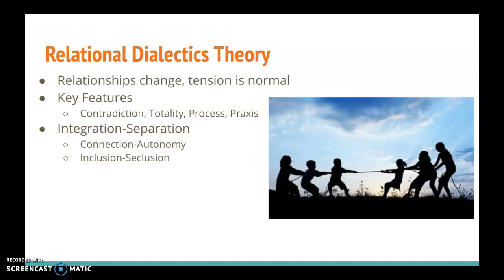Externally, a couple might experience the inclusion-seclusion tension. This happens when the couple wants to include themselves in social interactions with people outside of the couple, while at the same time feeling the need to exclude or seclude themselves to spend time alone together. So it's that tension between wanting to go out and wanting to stay in — wanting to be a part of larger society and wanting to just be their own little bubble. Internally, between the couple, we might feel connection-autonomy, and externally, we might feel inclusion-seclusion tension.